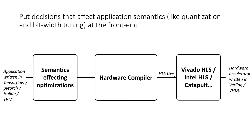In a lot of these applications, there are a few decisions that affect the actual semantics — the output result of running the program — like quantization and bit-width tuning. There are also optimizations like memory banking that affect throughput but not the output. Optimizations like quantization in a neural network or adjusting the bit width of an arithmetic operator actually change the results you get. It's a good idea to put any optimizations that affect semantics — like quantization and bit-width tuning — at the front end.